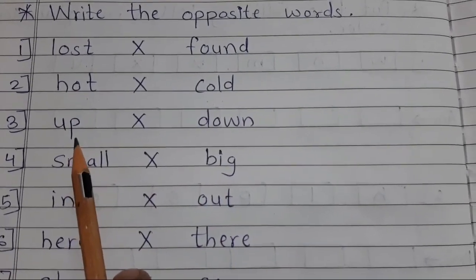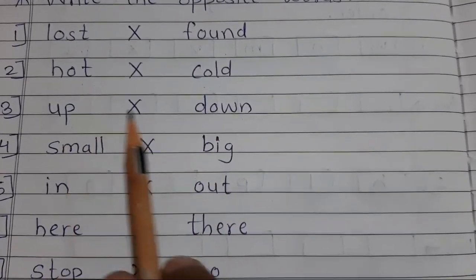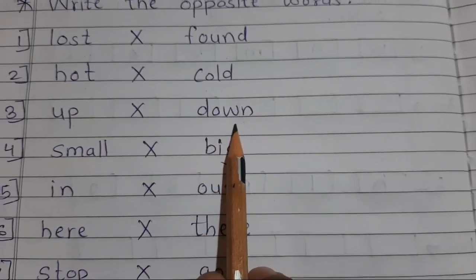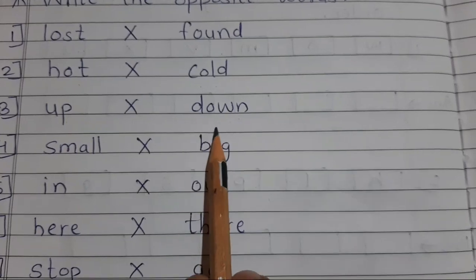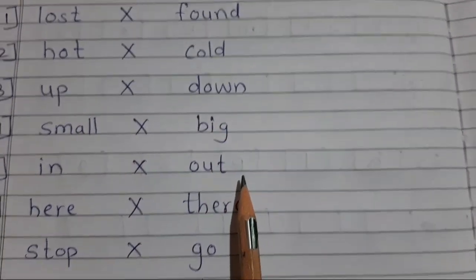Third is up. Up opposite D-O-W-N down. U-P up opposite D-O-W-N down. Up means up. Down means neeche. Up, down.